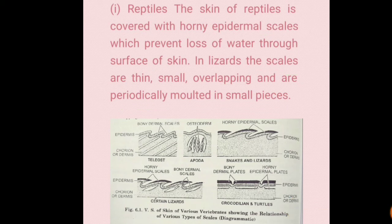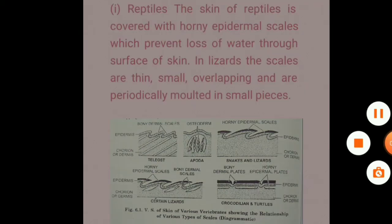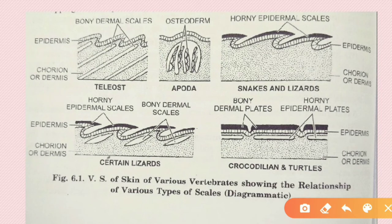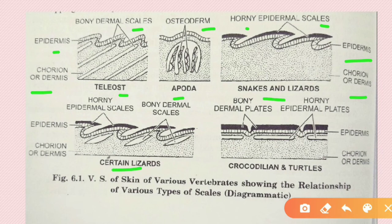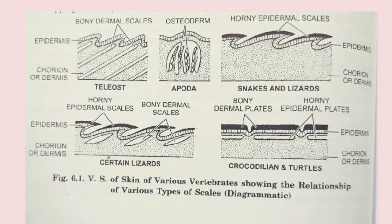A diagram shows the layers of skin in various vertebrates, illustrating the relationship between scale types. In teleost fish, there are bony dermal scales under the epidermis. In snakes and lizards, horny epidermal scales overlie the corium and dermis. In crocodiles and turtles, both horny epidermal scales and bony dermal scales are present, with the corium and dermis beneath.